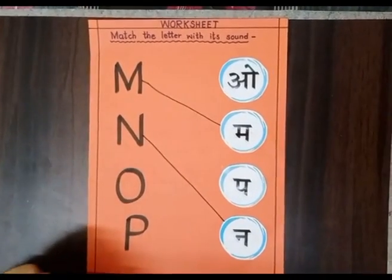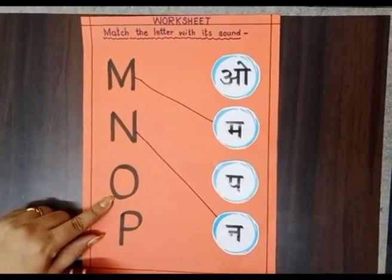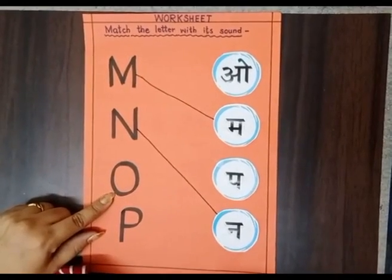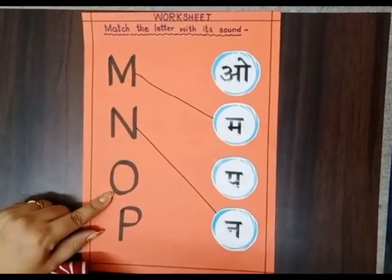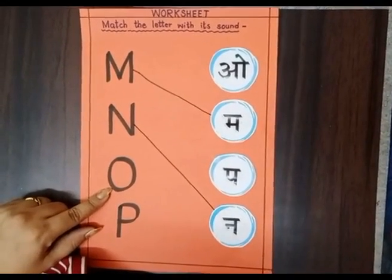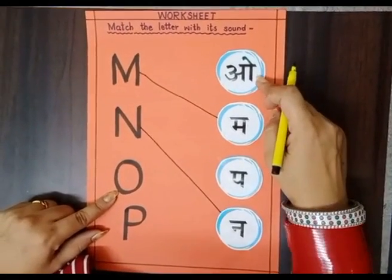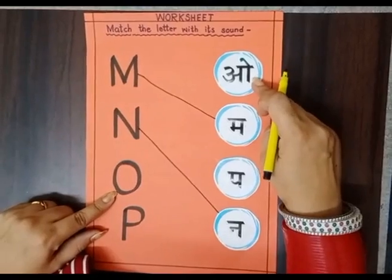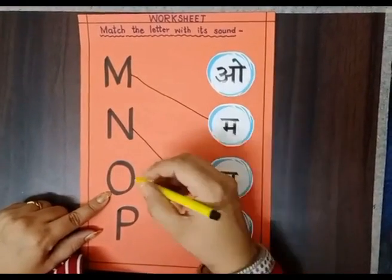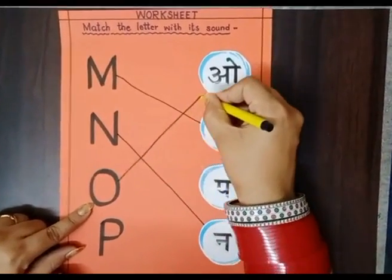Next letter is letter O. O, octopus. Speak with me — O, octopus. O, orange. Where's the sound of O? Here. This is the sound of O — O, octopus. Match the letter O with its sound.